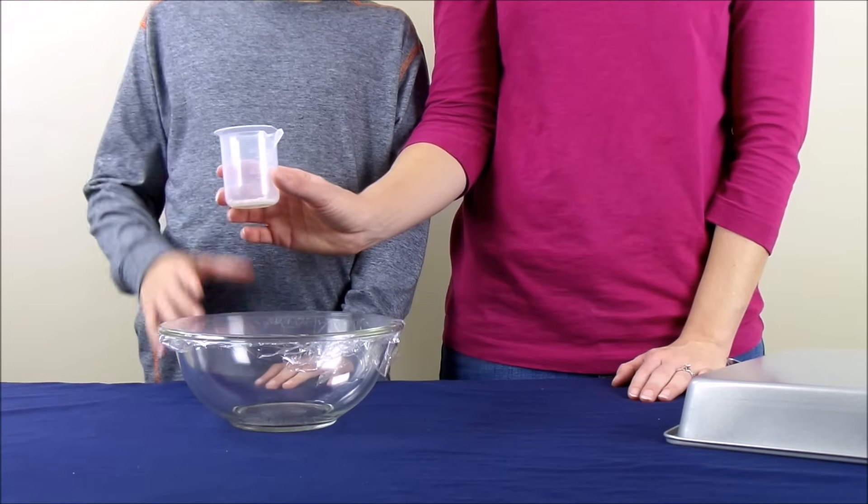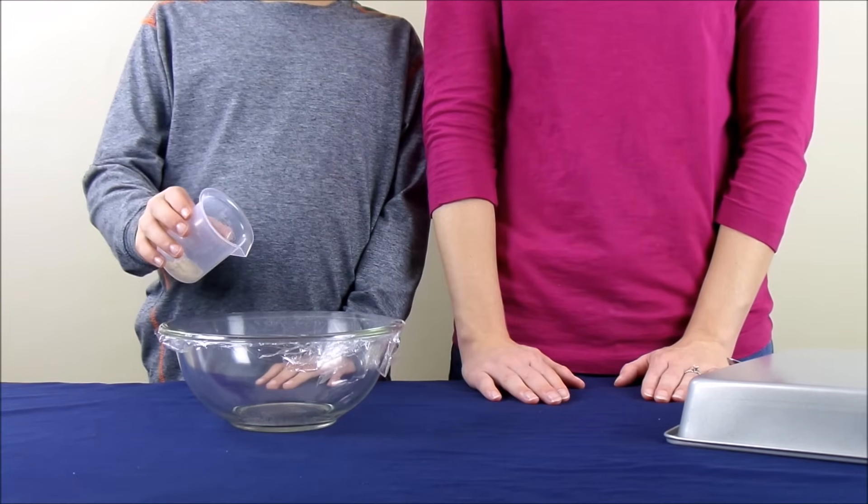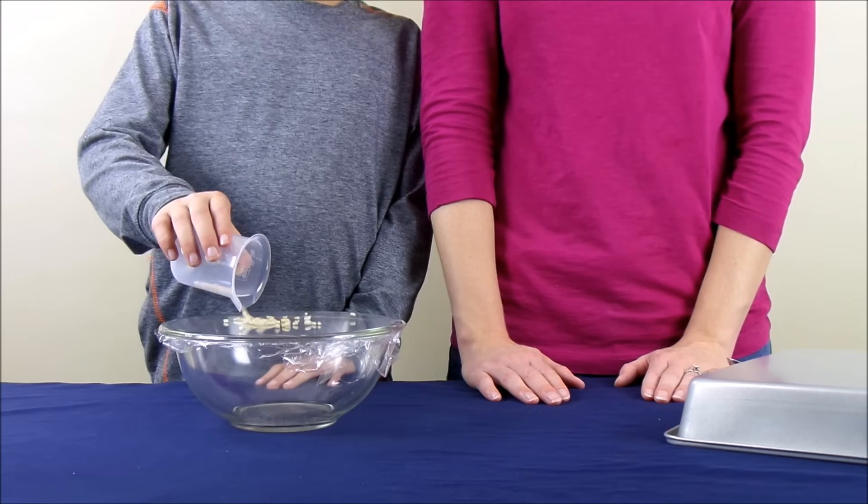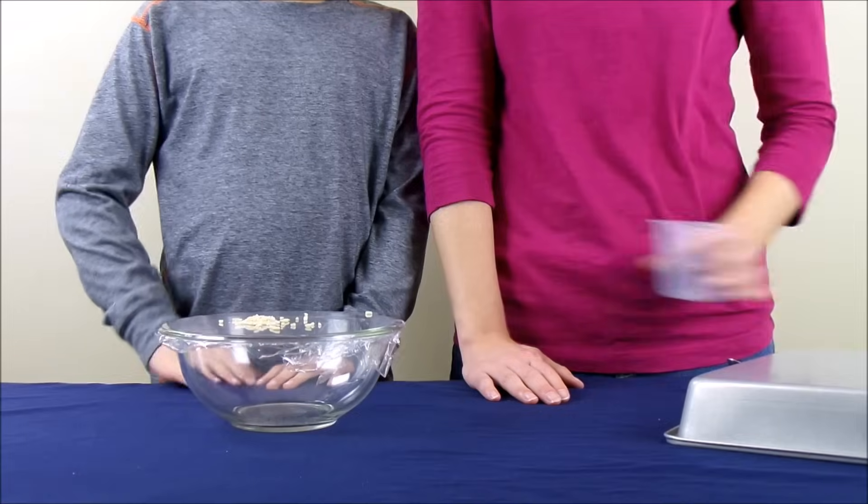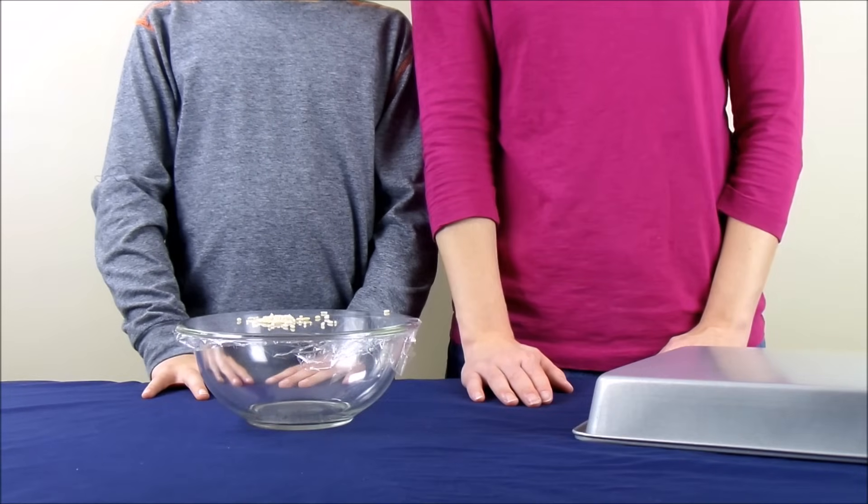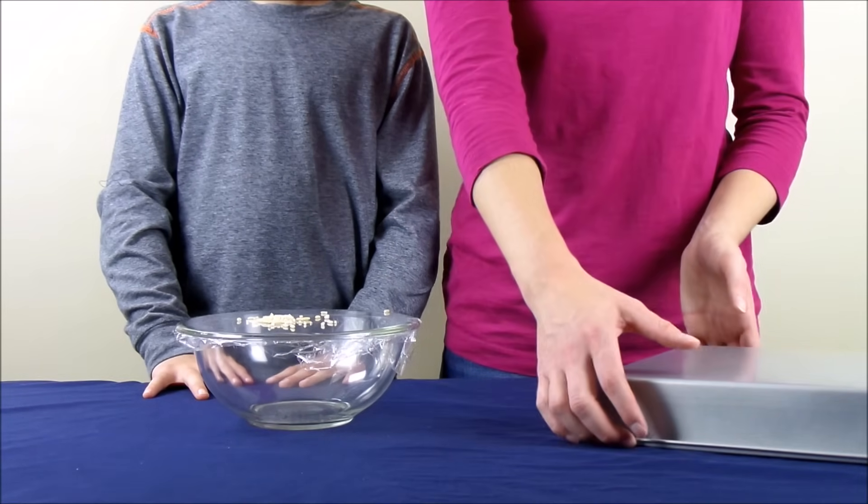This is where you're going to take some uncooked rice and pour about a teaspoon full on the top of the saran wrap. Once the rice is on the saran wrap, you're going to take a metal tin.